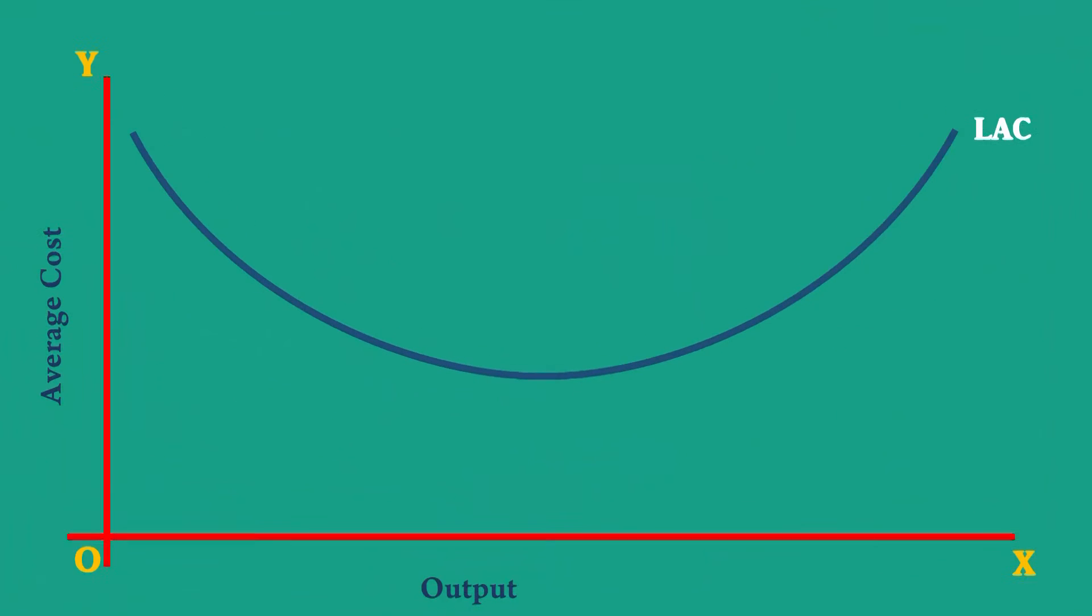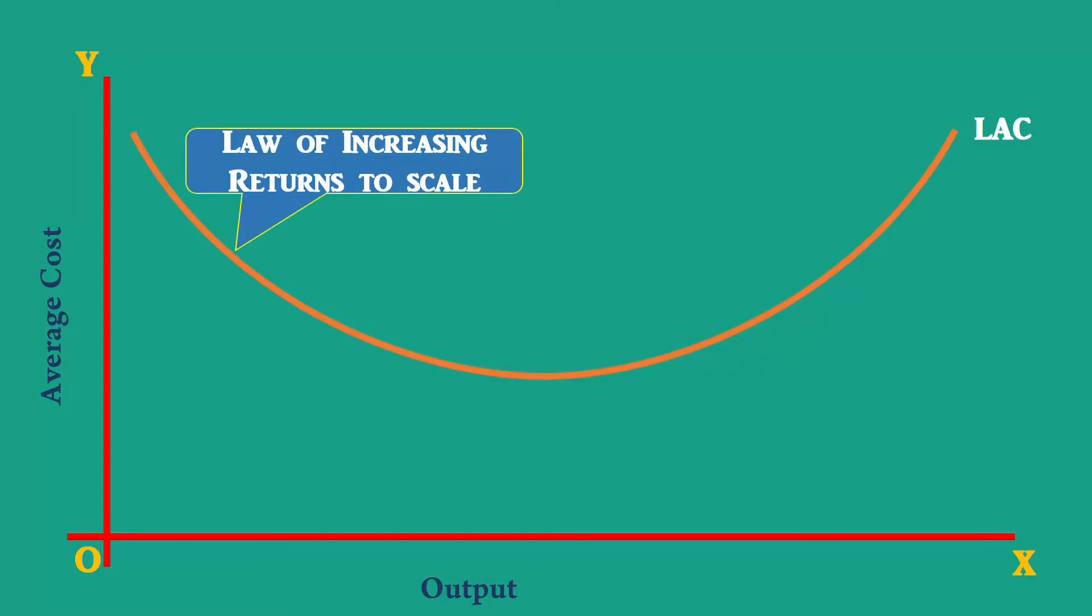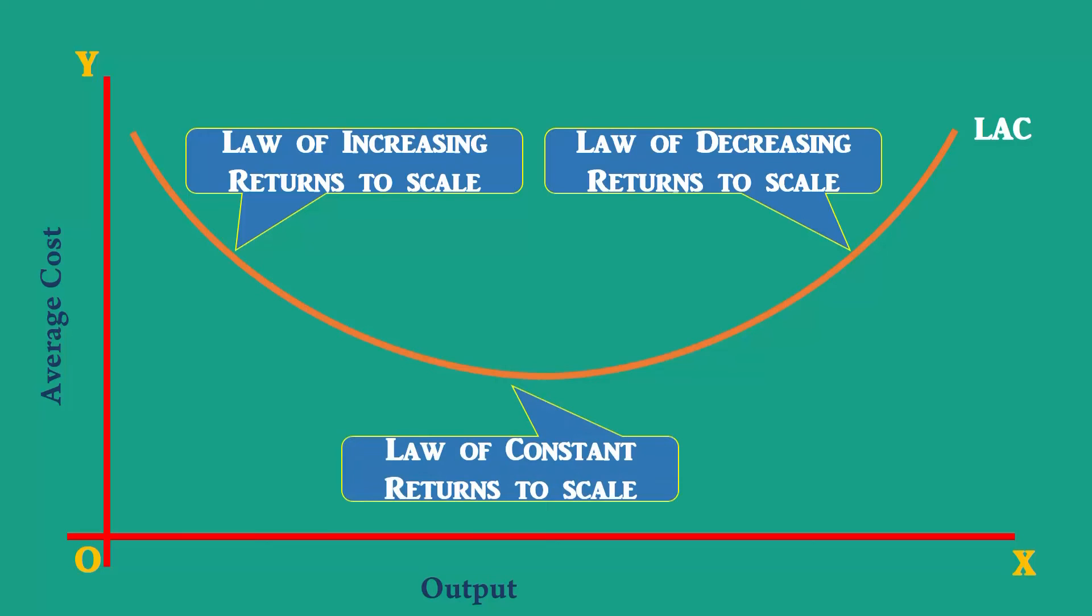The laws of returns to scale define the shape of the long run average cost curve. The operation of the law of increasing returns to scale makes the curve to fall first. The long run average cost curve rises due to the law of decreasing returns to scale. At its minimum point, the law of constant returns to scale operates.